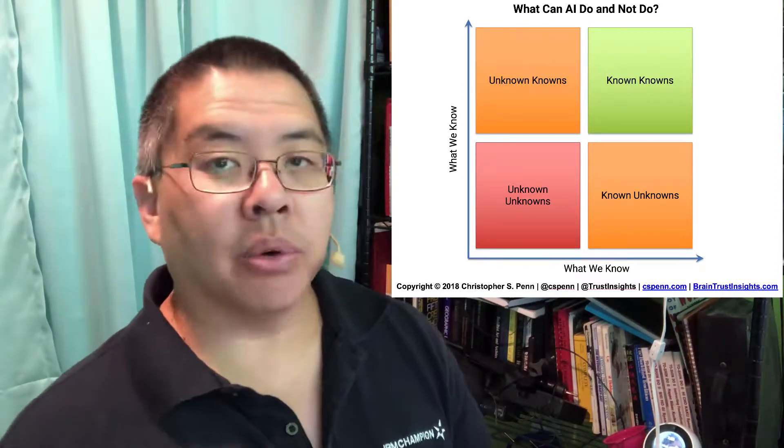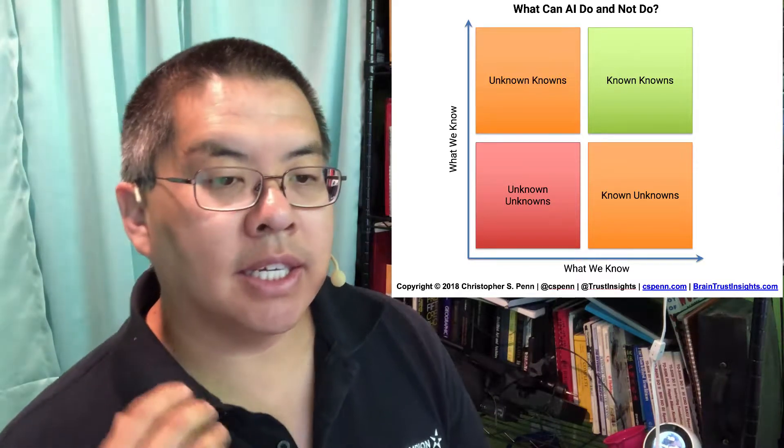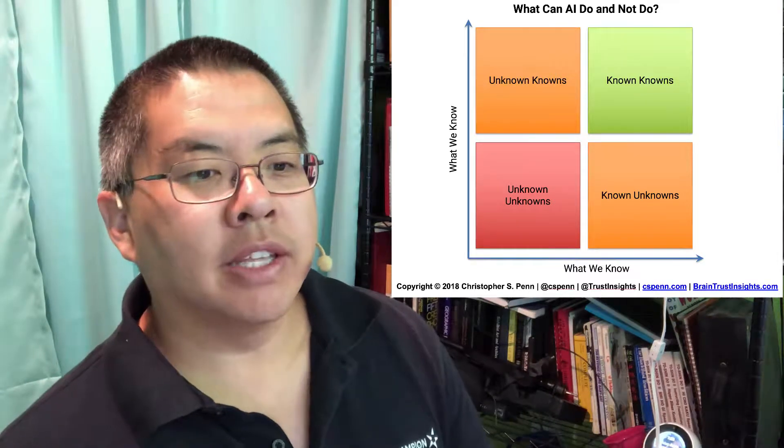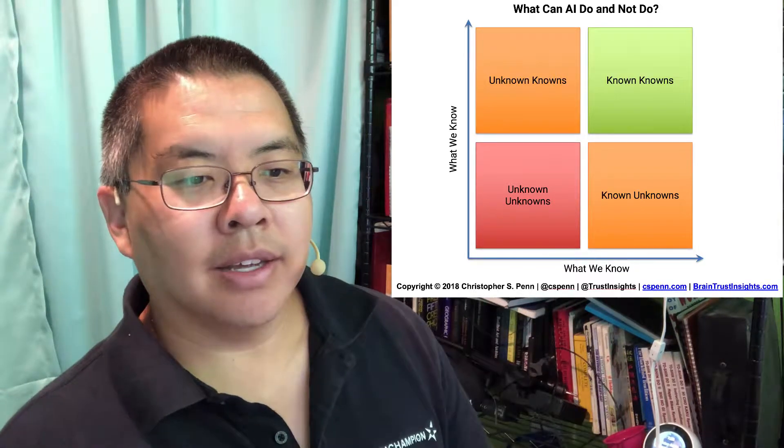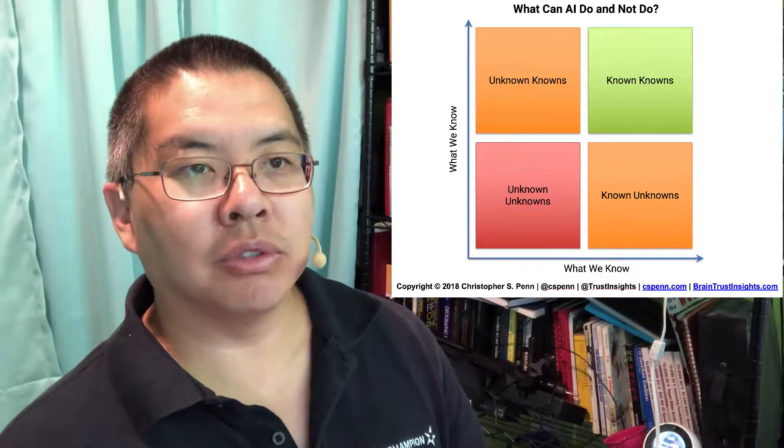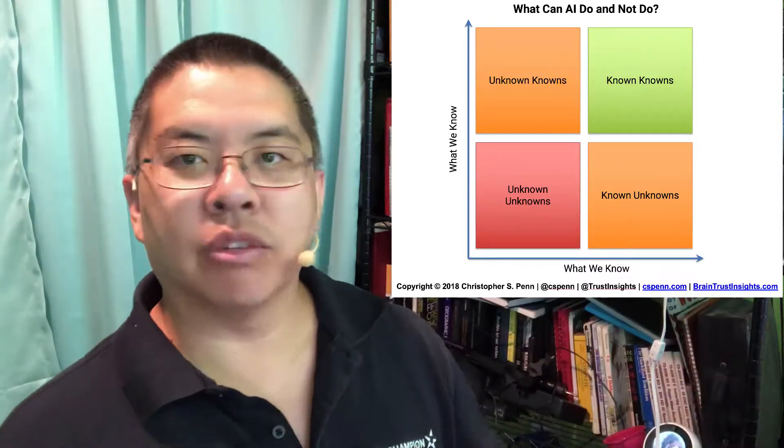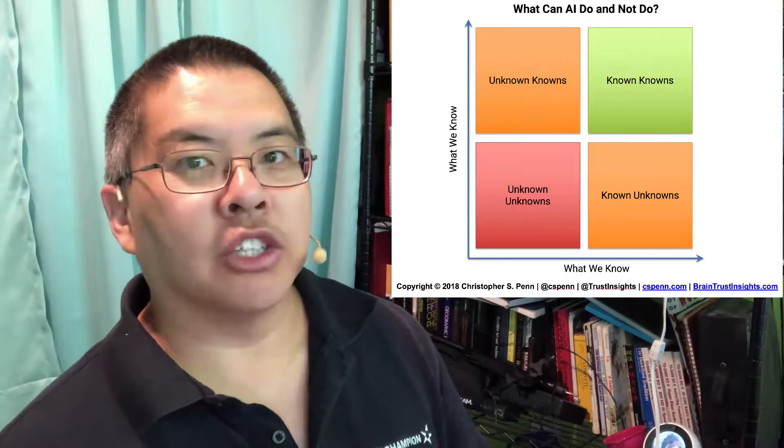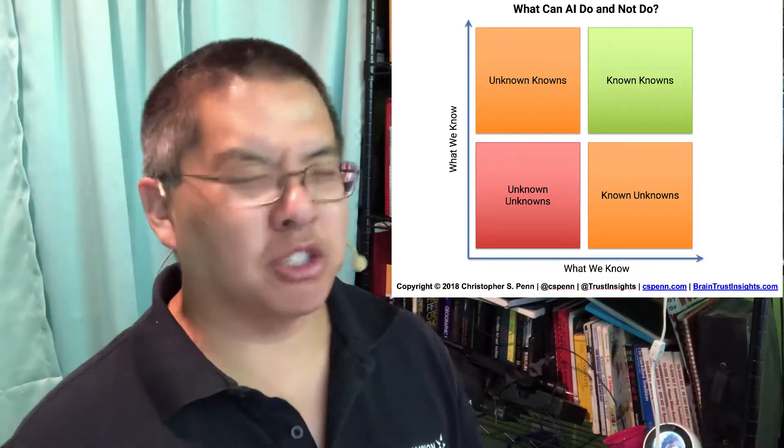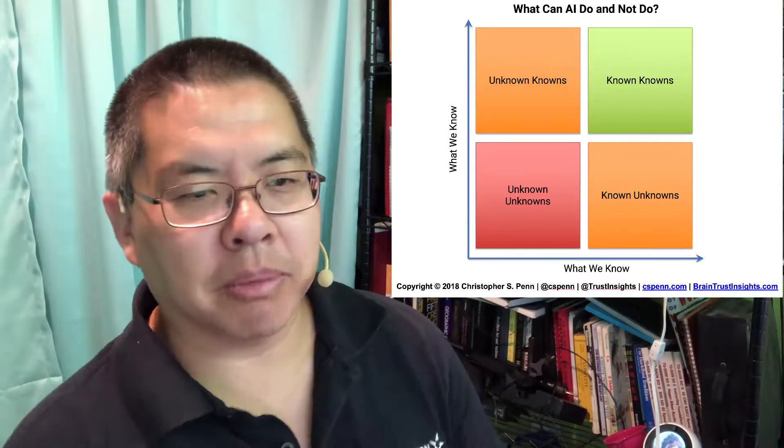The third category in the upper left-hand corner is the unknown knowns. In that GPS example, this is you know the means but you don't necessarily have a destination set. You know the area really well, and you're not sure where you're going. But wherever it is within that 25-mile radius of your house, you know how to get there. You know the roads like the back of your hand.